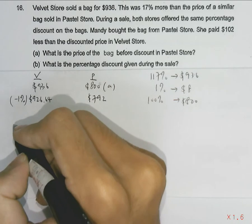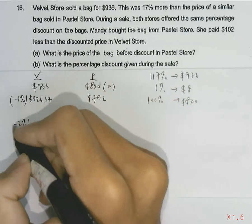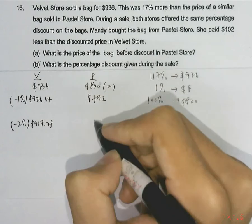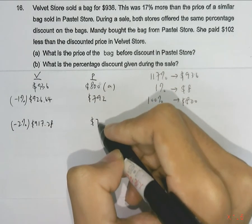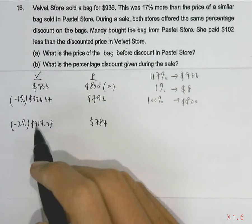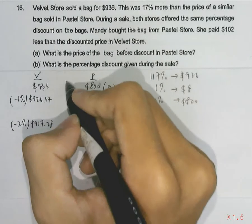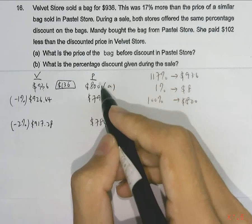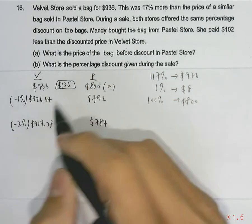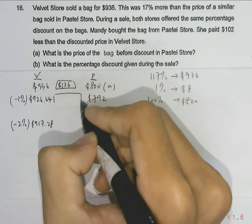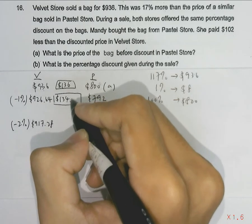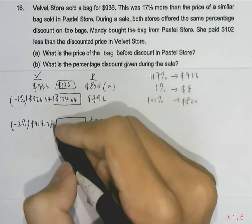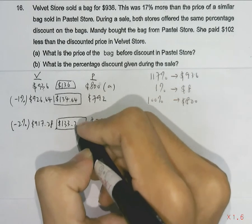If both stores have a discount of 2%, the velvet store will be selling the bag at $917.28, while the pastel store will be selling it at $784. Now the difference between these two prices: with no discount it is $136, with 1% discount the difference is $134.64, and with 2% discount the difference in price will be $133.28.